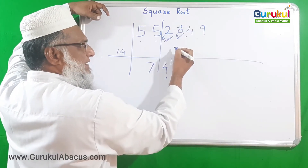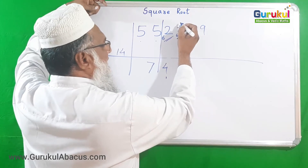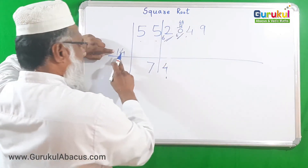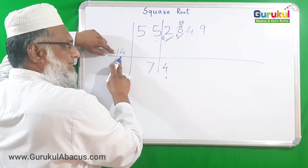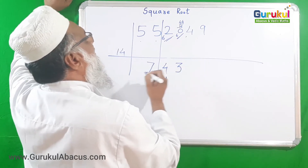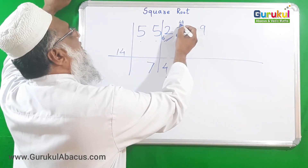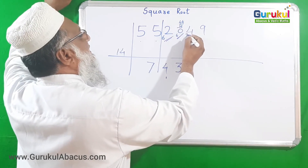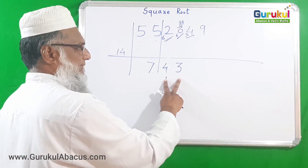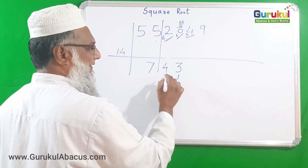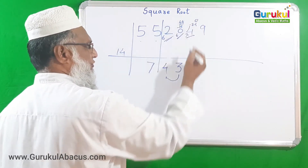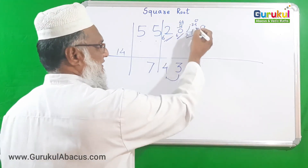With 44 and divisor 14, we try 14 × 3 = 42, which is suitable. Subtracting 42 from 44 leaves 2. Bringing that with the next digit gives 24. Now subtract the dvandva of 43: 4 × 3 doubled is 24. Subtracting 24 from 24 gives 0. So 14 × 0 = 0.